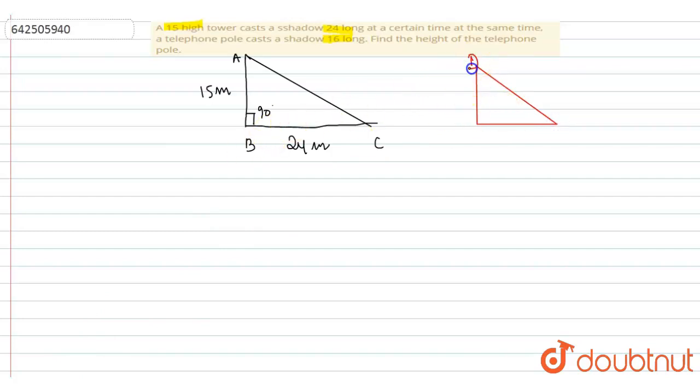This is the height which we don't know. D, E, F. Again this is 90 degrees. And this is 16 meters, and this height we don't know.